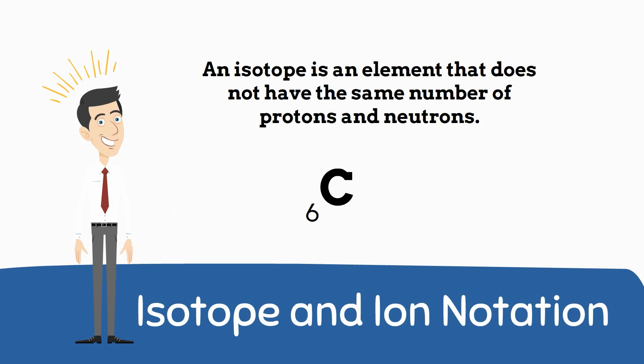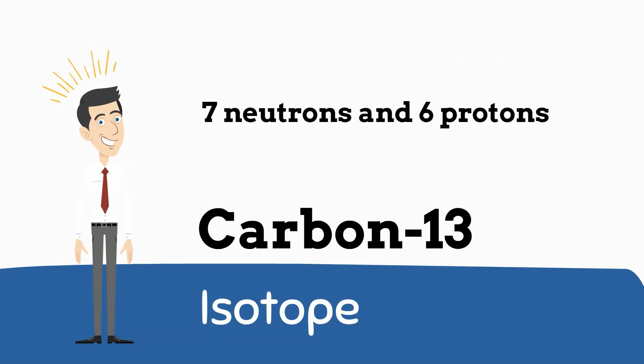Most elements of carbon have a mass number of 12, which means the neutrons and protons are an equal number. Carbon-13 has 7 neutrons and 6 protons, so it is considered an isotope.